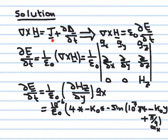J has two components: the impressed part and σE, because conductivity σ also produces a current density. But no one says anything about conductivity here, so we assume we are in free space, where conductivity is zero. Therefore curl H equals partial D partial t, and since D equals ε_naught E, I can divide both sides by ε_naught.